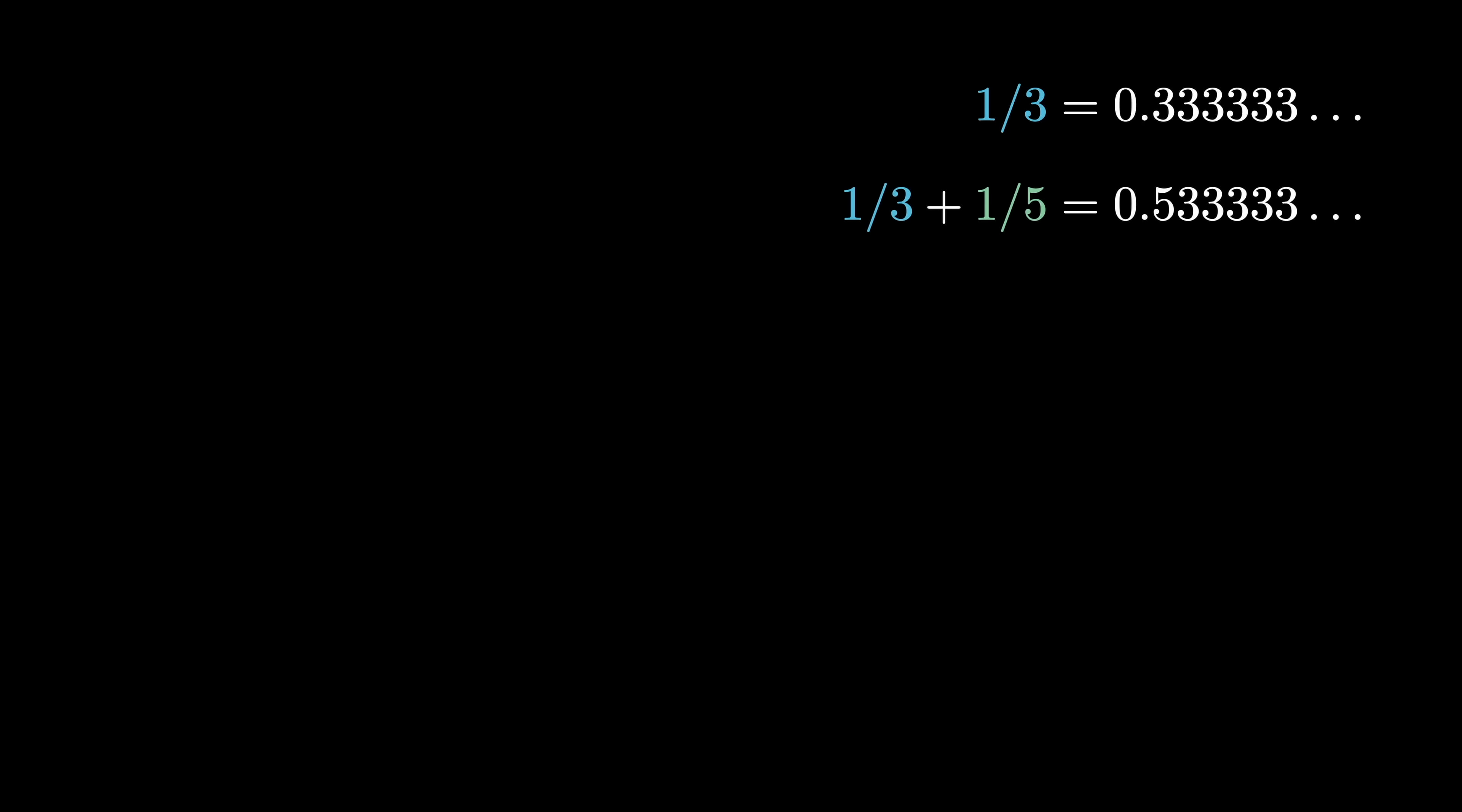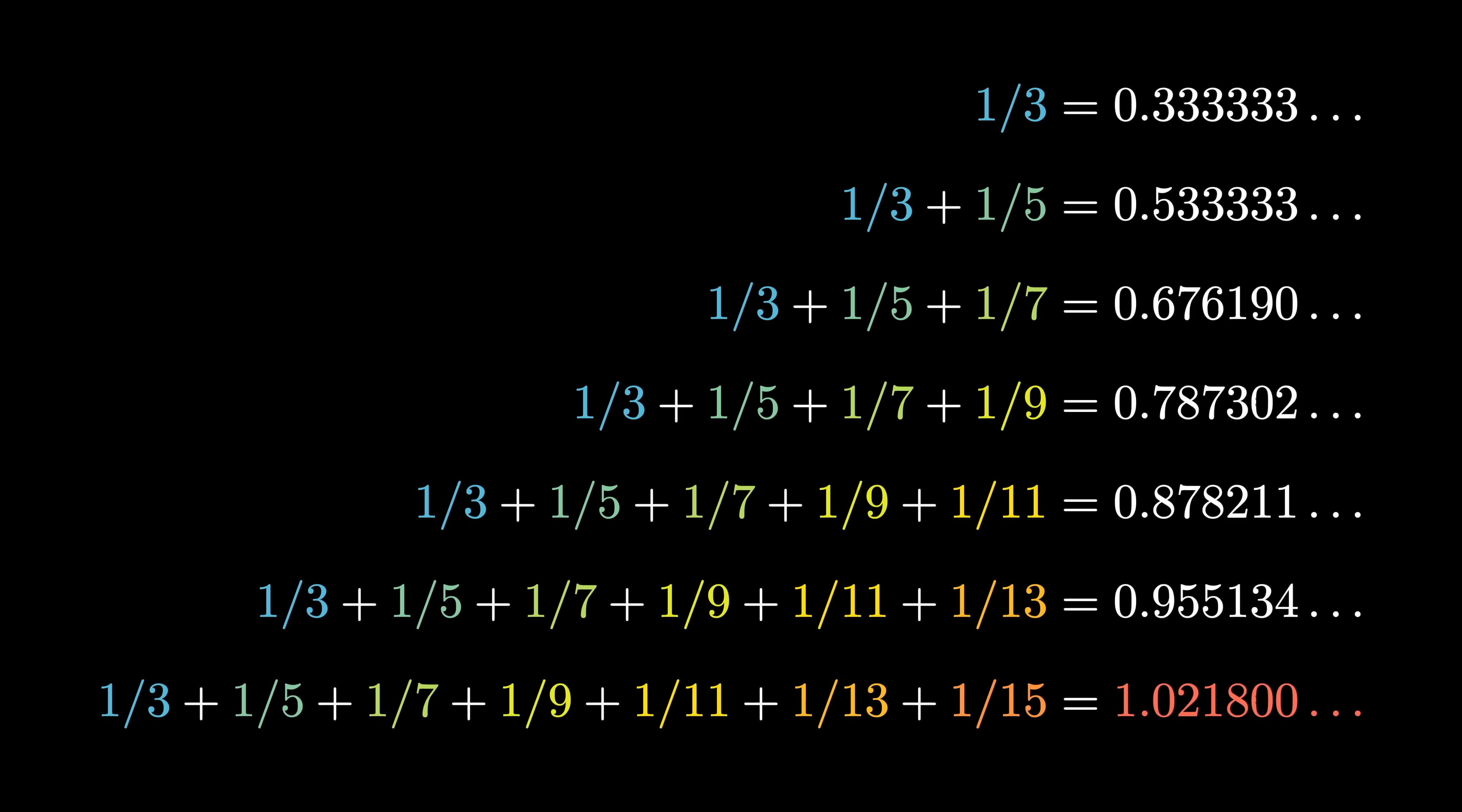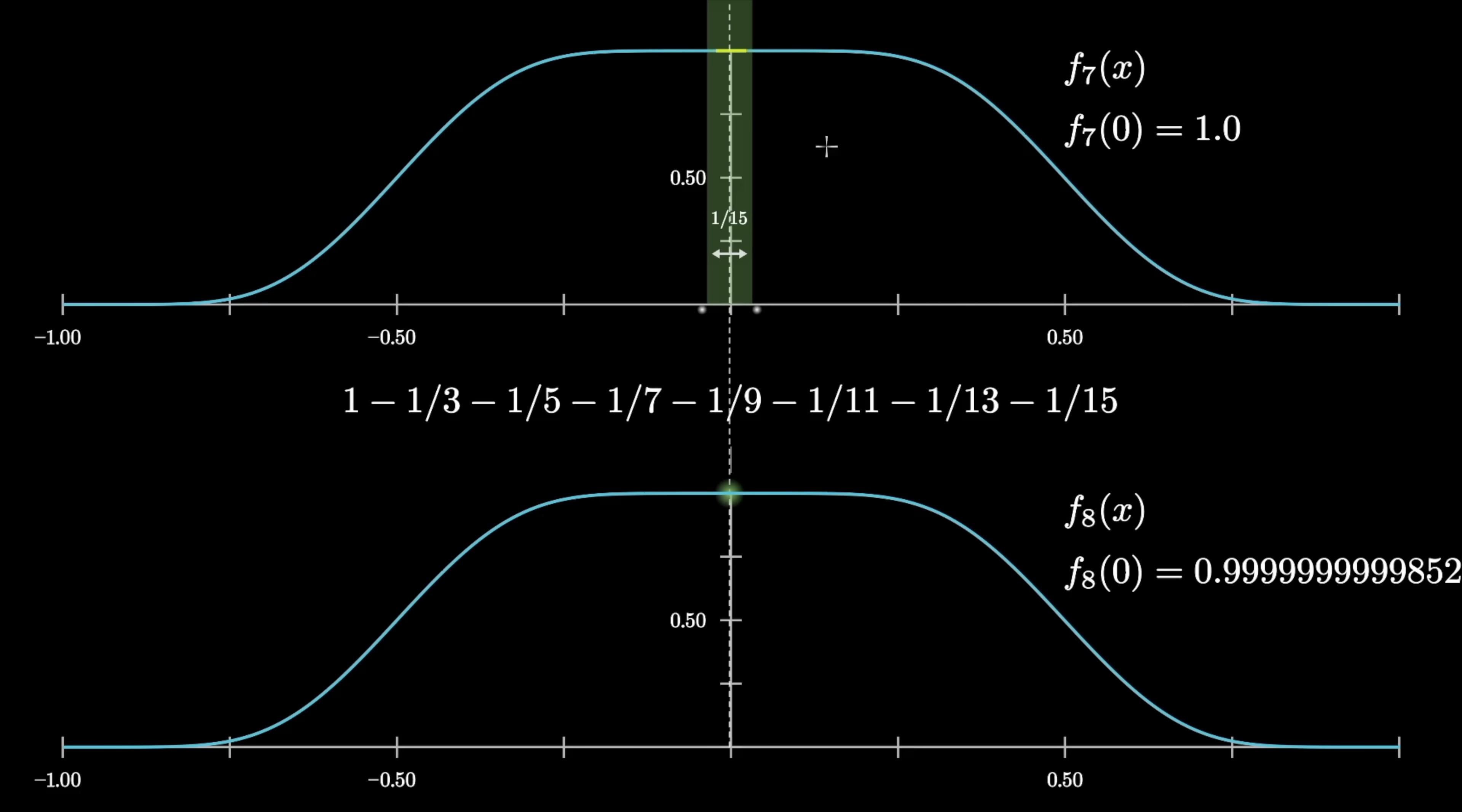And the only thing that's special about the number 15 here is that as we keep adding the reciprocals of these odd fractions, 1 third plus 1 fifth plus 1 seventh, on and on, it's once we get to 1 15th that that sum grows to be bigger than 1. And in the context of our shrinking plateaus, having started with a plateau of width 1, it's now shrunk down so much that it'll disappear entirely.